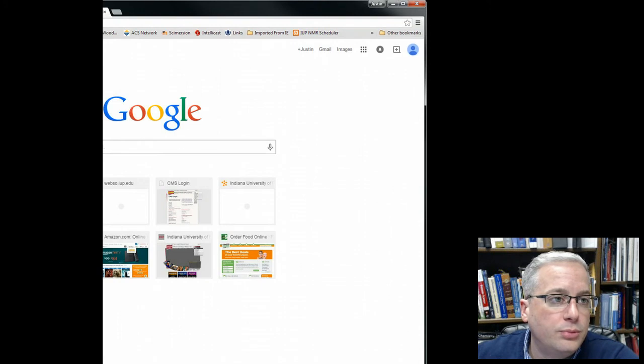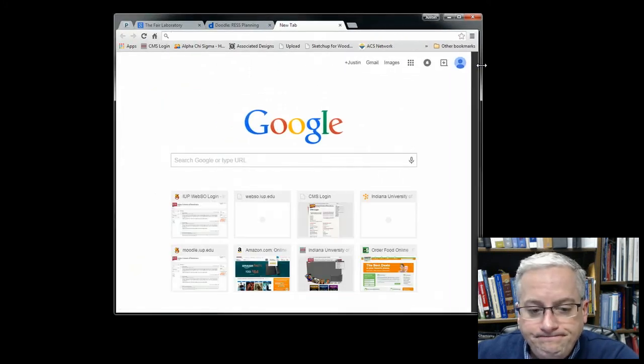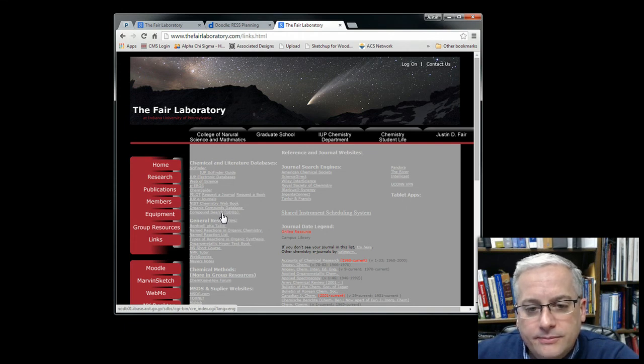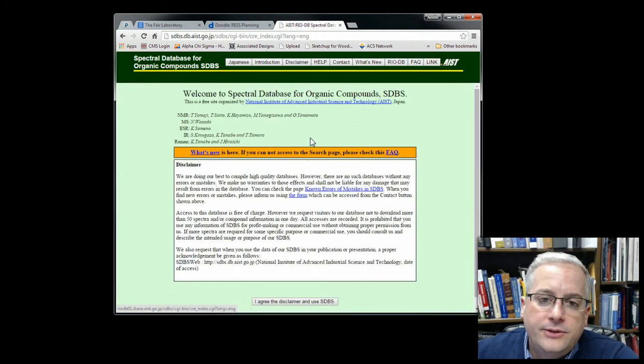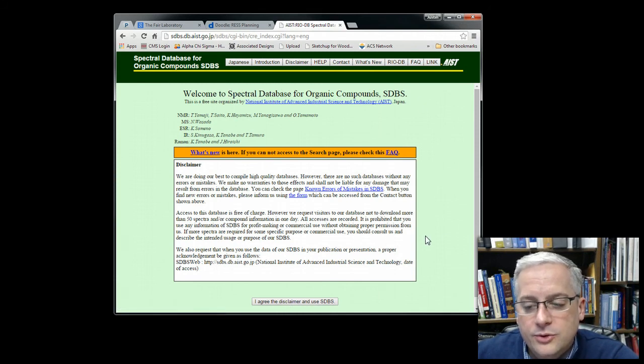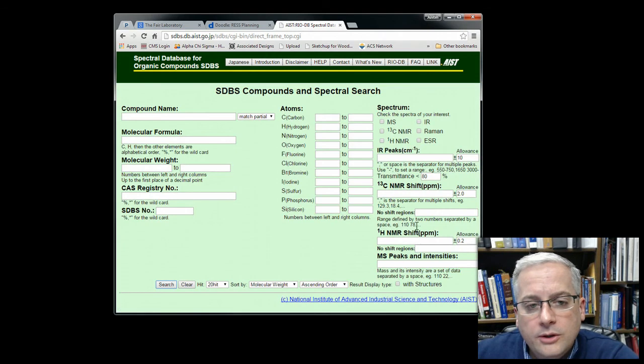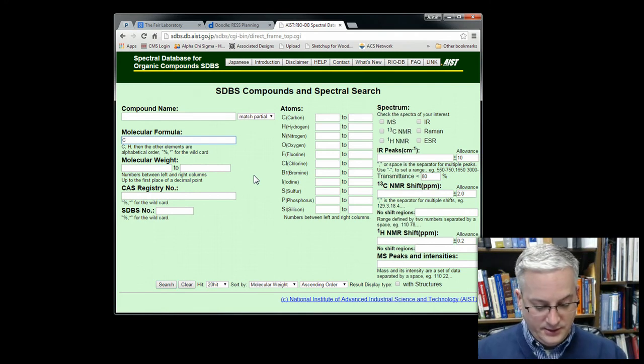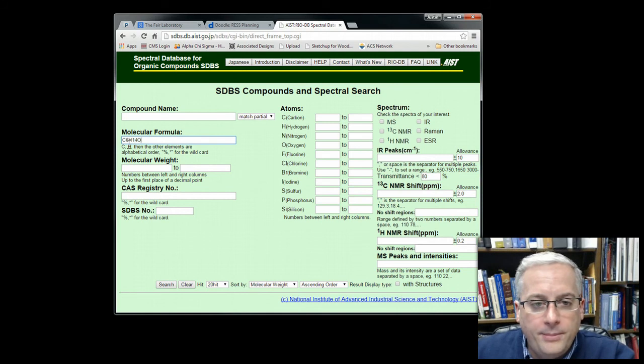Not the doodle pool. Here we go. I want to show you... If I go to the fairlaboratory.com, I have a links page. And on this links page, you can see that I have this thing called SDBS. So in the SDBS, if you go there, it takes you to this website. The spectral database for organic compounds. And you can go ahead and agree to use it. And we can look up compounds, either by name or molecular formula. So let's just make one up. So let's say C6H14O. So I'm going to look for an alcohol because... Let's say your compound has this molecular formula. I'm going to go ahead and search for it.